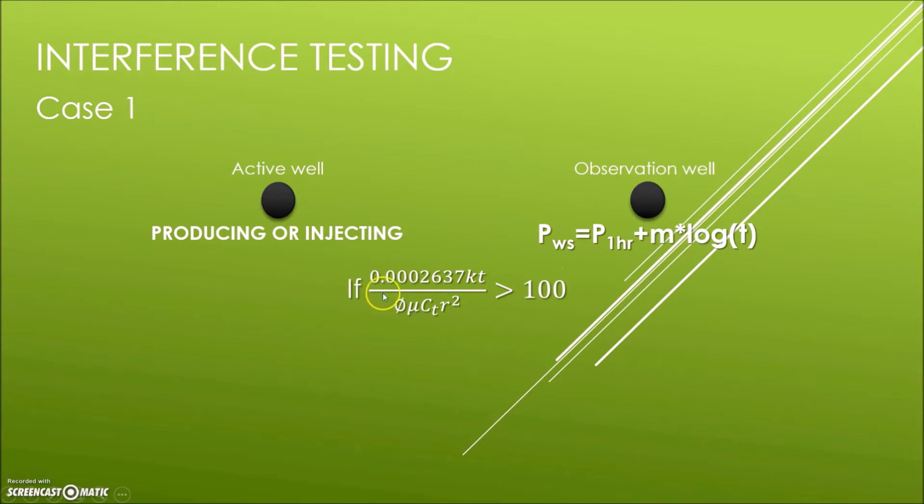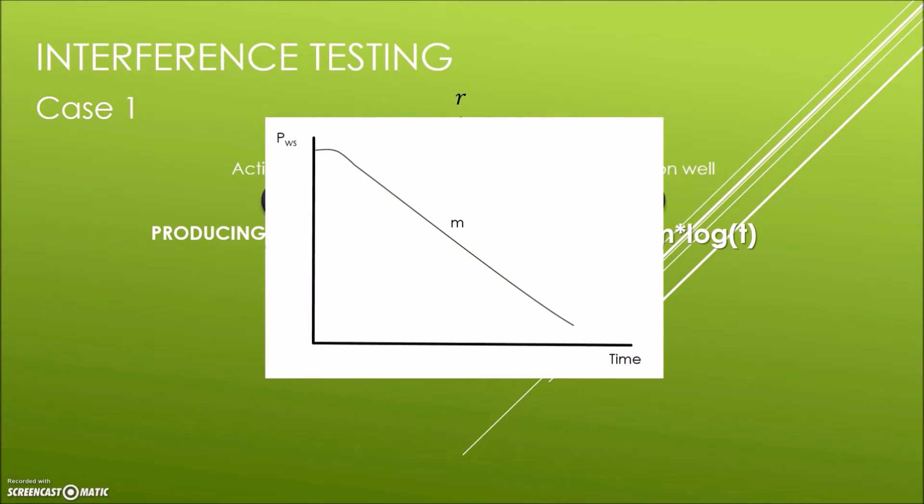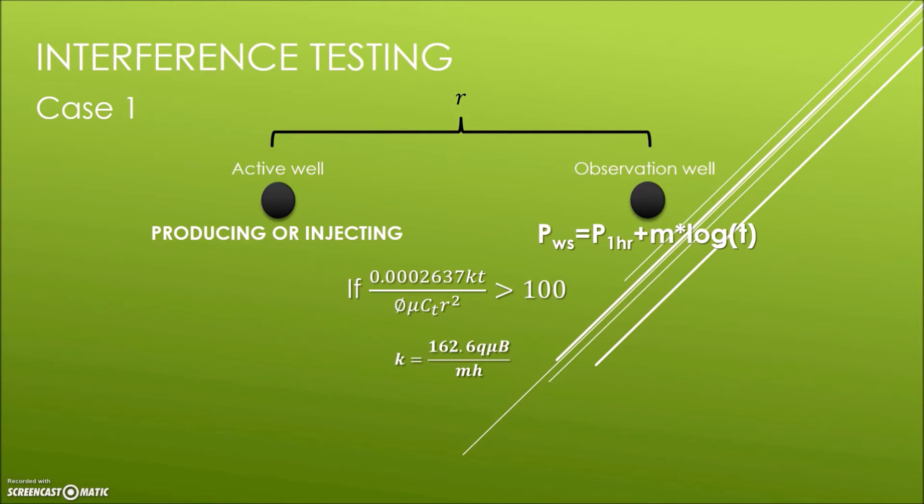For this formula to be applicable, the value of 0.002637 times K times T over porosity times mu times CT times R square must be greater than 100. To calculate this value, we must first plot a semi-log graph using the obtained data where P against time. From this graph, you should be able to calculate the gradient M of the straight line region. Next, you can calculate K or the permeability using the equation 162.6 times the flow rate times mu times B over the gradient times H.